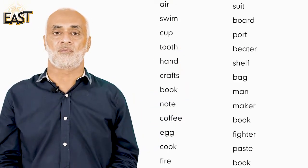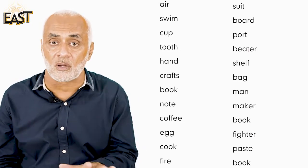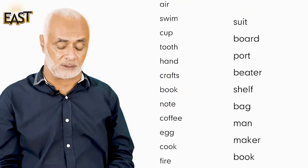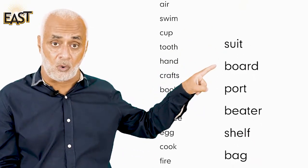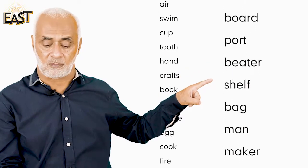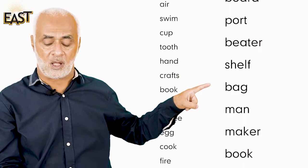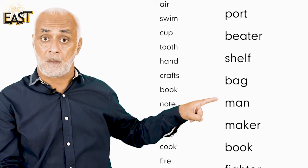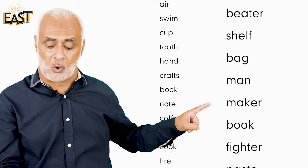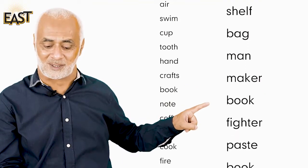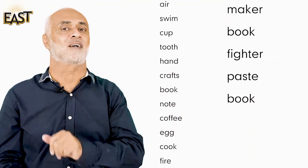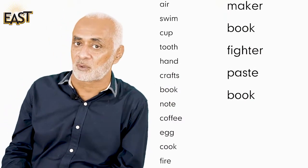Now you have written all the words in your copy. Now look at the second list of words: suit, board, port, beater, shelf, bag, man, maker, book, fighter, paste, and book. Write down these words in your copy.